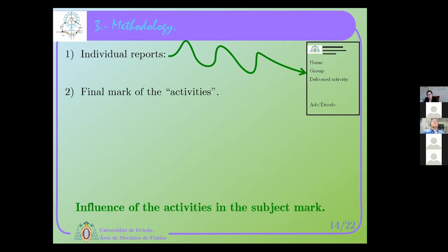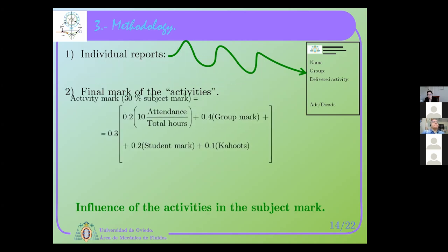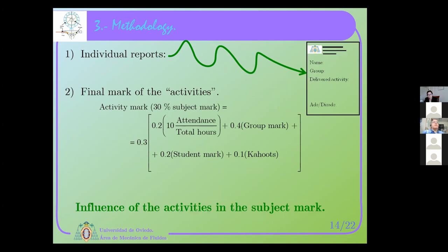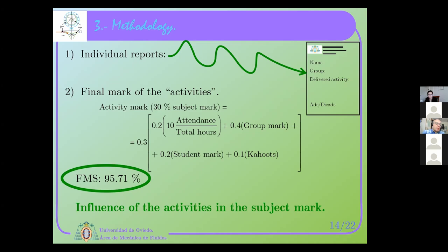Students have to deliver some individual reports on the activities. There is an algorithm for the activities: attendance, part of each individual mark is also part of the group mark, and then finally individually for each student, the mark they obtained in the Kahoots. Regarding the agreement degree of the students, it was quite high. We did satisfaction surveys and got quite good results on that indicator for satisfaction with the methodology.